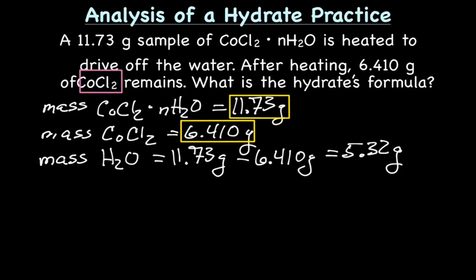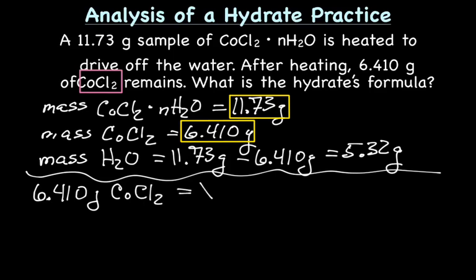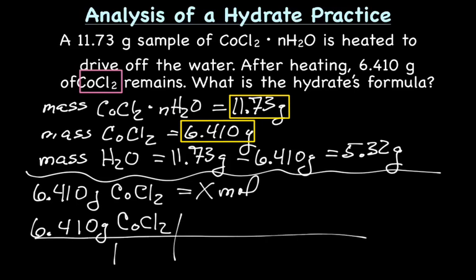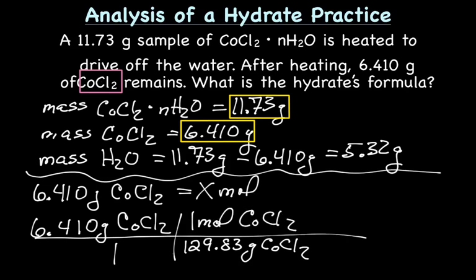So next we need to figure out the number of moles of the cobalt-2 chloride. So we have 6.410 grams. And we want to know the number of moles. So we'll set up our grid, 6.410 grams over 1. And we'll figure out, to put on the bottom of our grid, we need to figure out the molar mass of CoCl2. And when I calculated that, I got 129.83 grams CoCl2, one mole CoCl2 on the top. So those cross out. Multiply across the top, across the bottom, and then divide.